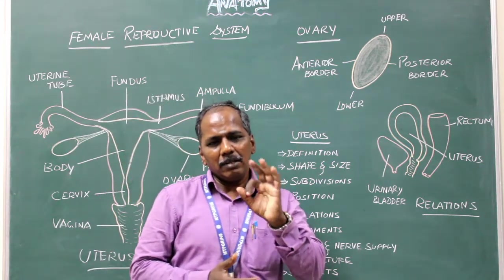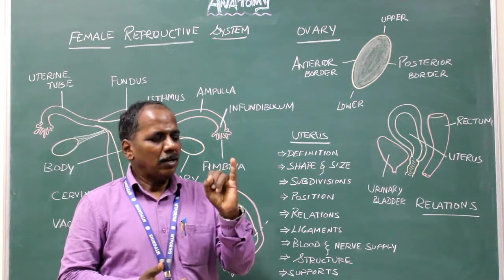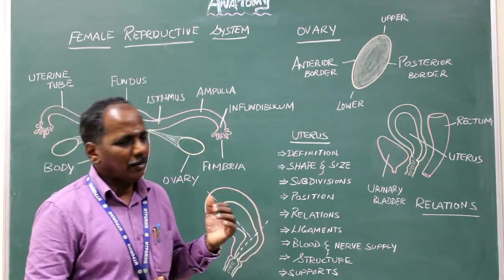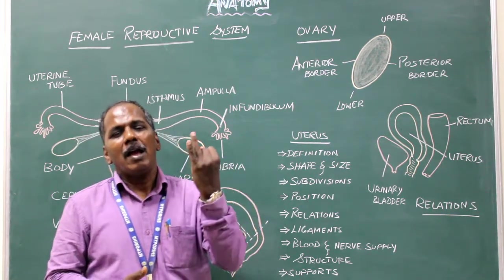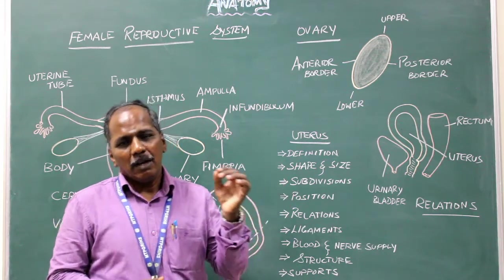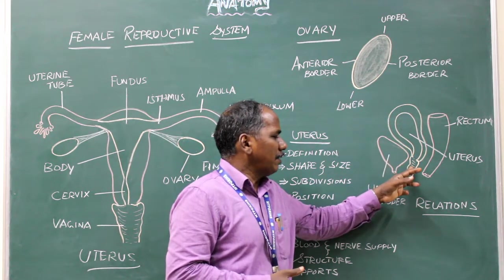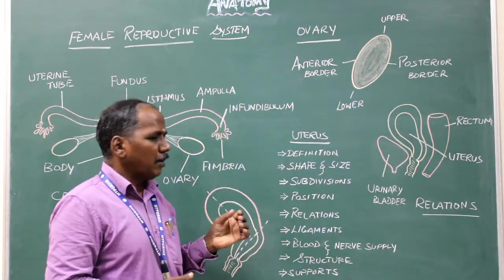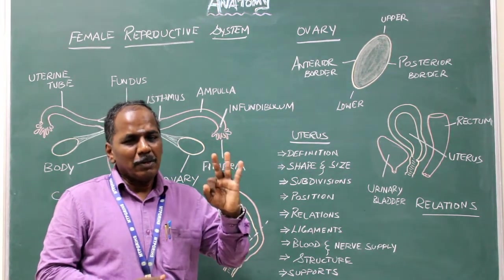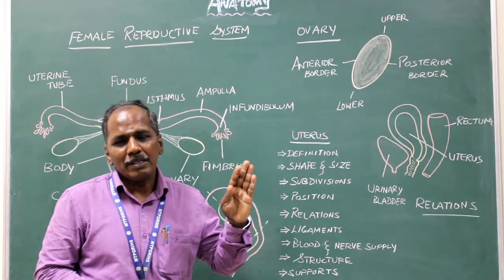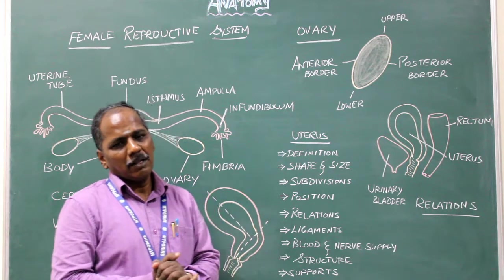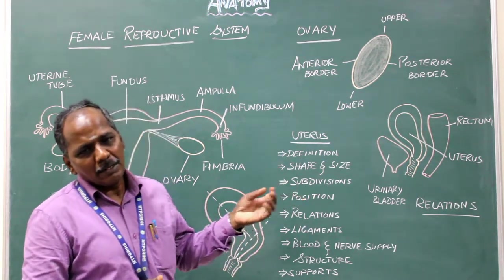Supports of the uterus — there are three supports: number one, muscular support; number two, ligaments; number three, visceral supports. Muscular support is by the pelvic diaphragm, perineal body, and urogenital diaphragm. The visceral supports are by the urinary bladder and the vagina. The ligament supports are: broad ligament, round ligament, uterosacral ligament, transverse cervical ligament, and pubocervical ligament. Any damage to these results in prolapse of the uterus.